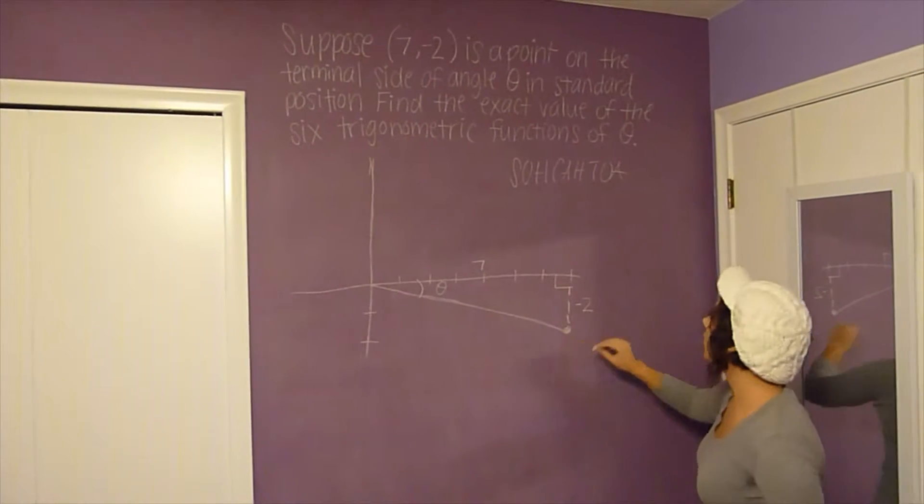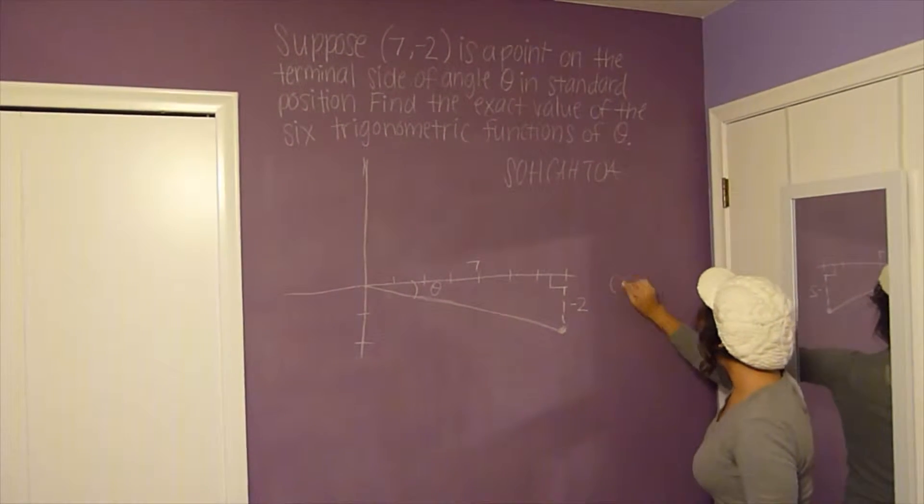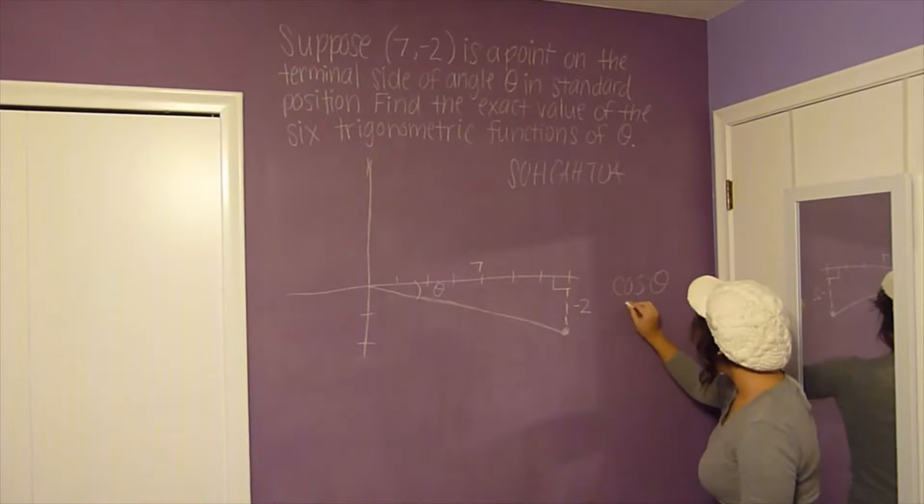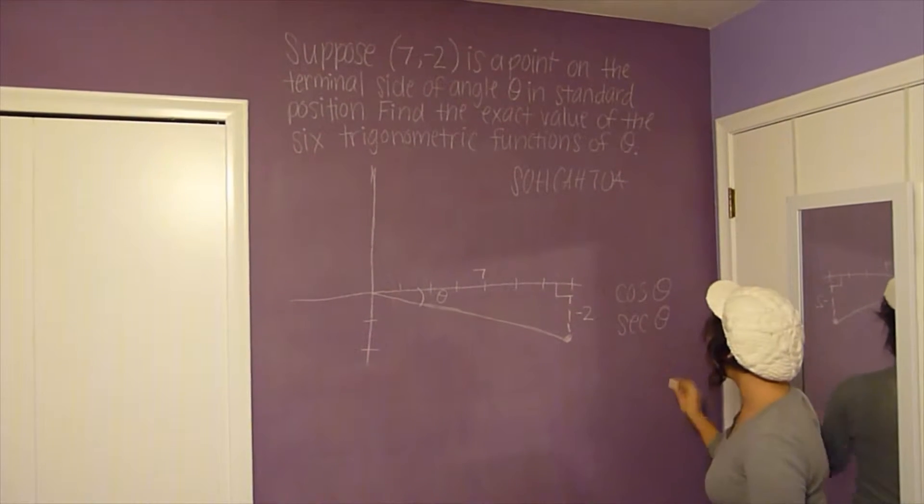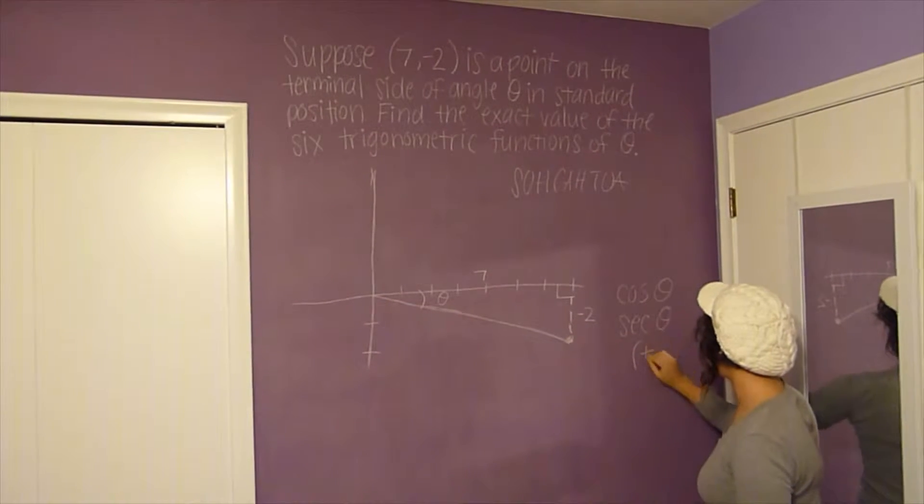And in the fourth quadrant, you have to remember that cosine of theta and secant of theta are both going to be positive in the fourth quadrant.